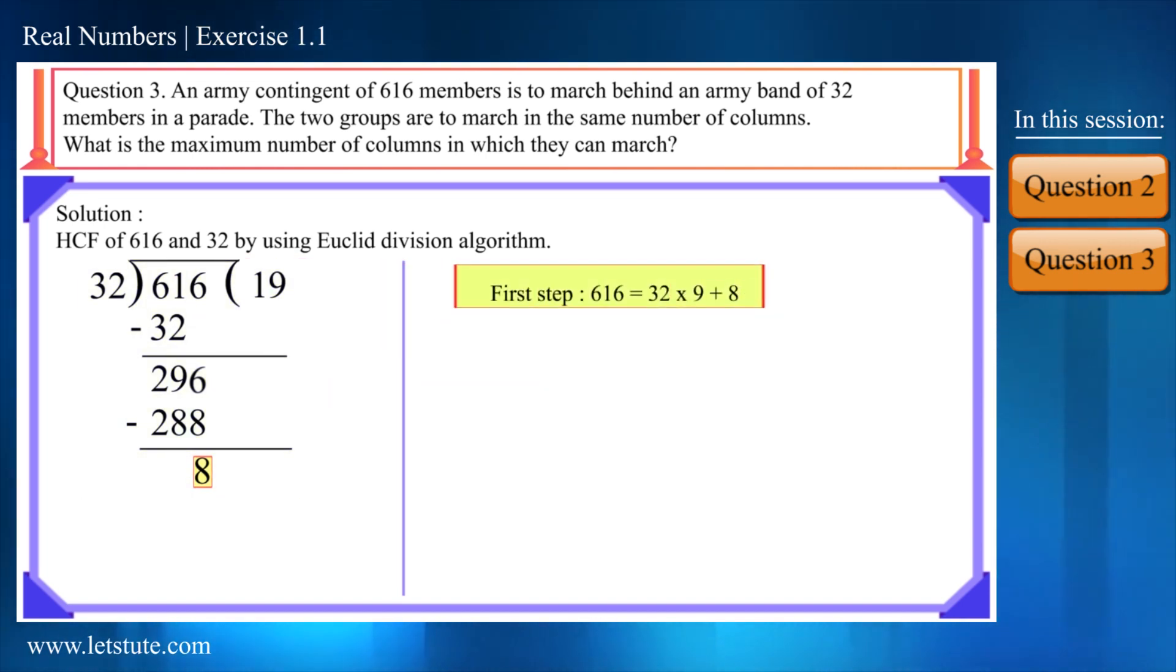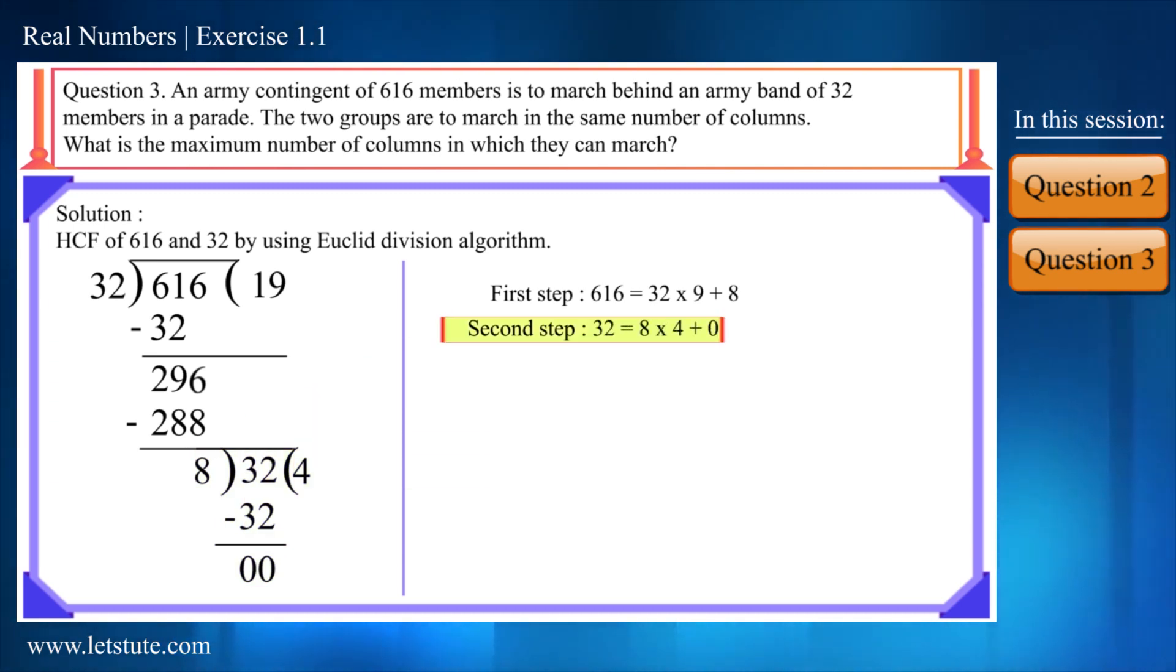We can write 616 as follows. Now let's proceed by considering this remainder as a divisor and 32 as a dividend. It would be completely divisible and we will get remainder as 0. So this would be our second step. We can write 32 as 8 multiplied by 4 plus 0.